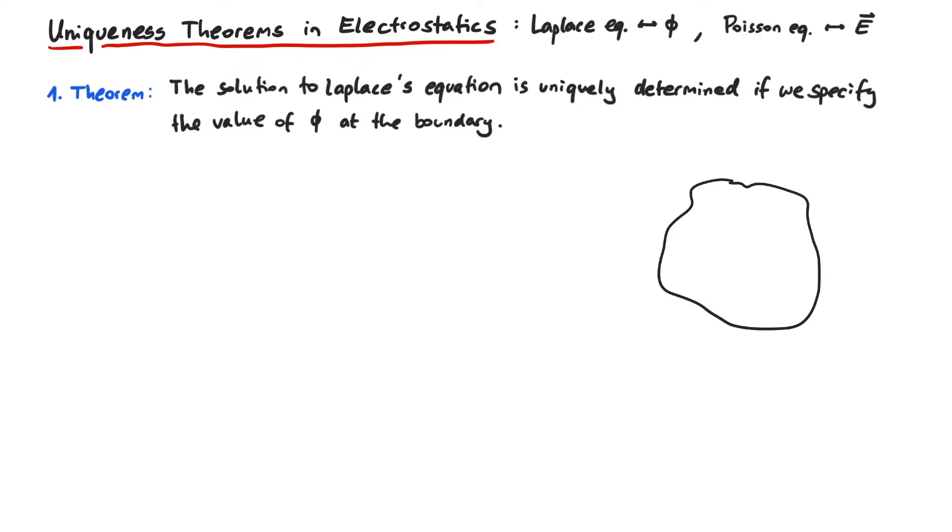The Laplace equation describes a region without any charge density. Any charges that affect the shape of our potential are somewhere else, outside the region, and they determine the value of phi at the boundary.